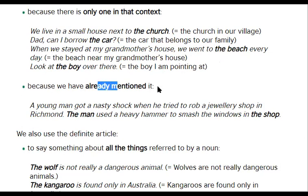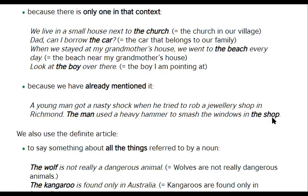Because we have already mentioned it in our text: 'A young man got a nasty shock when he tried to rob a jewelry shop in Richmond. The man used a heavy hammer to smash the windows in the shop.' Which man? The one we have already spoken about. And which shop? The jewelry shop, which has already been mentioned previously.